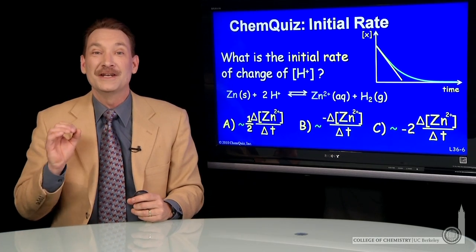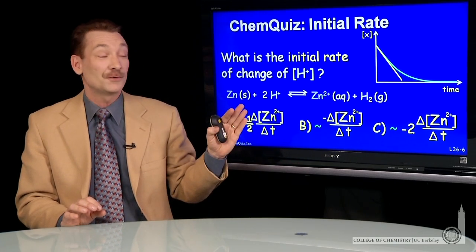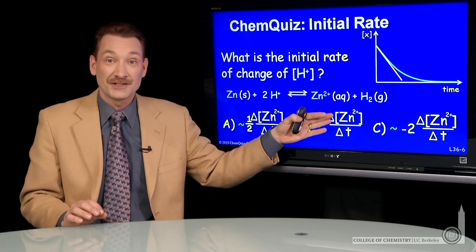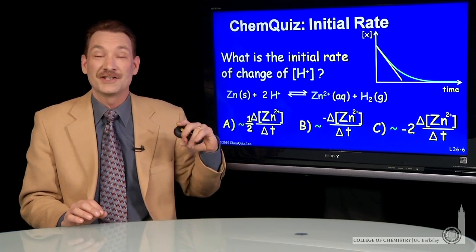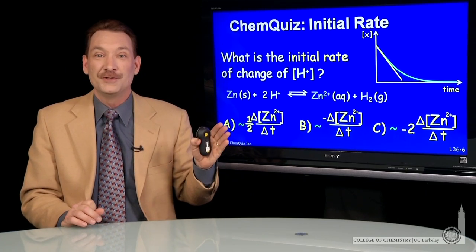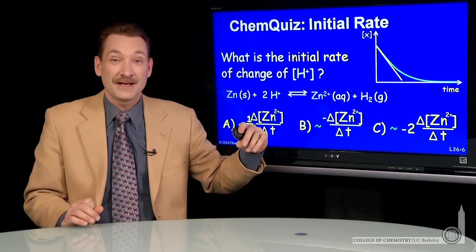We're talking about writing an initial rate for a chemical reaction. And we can write initial rates in terms of changes in concentration over a change in time. And we do that for the various products and reactants.